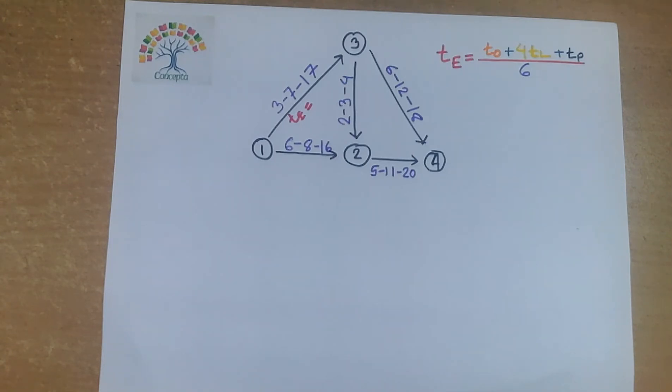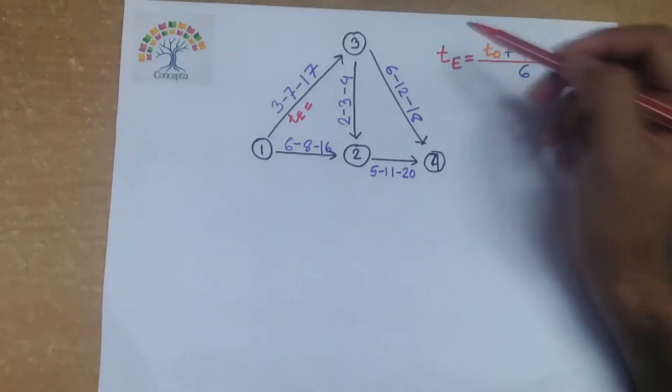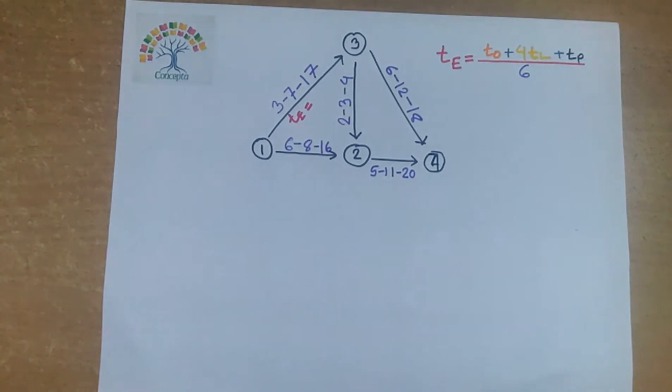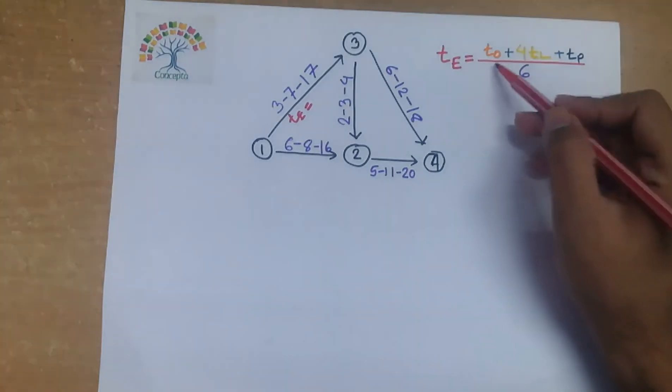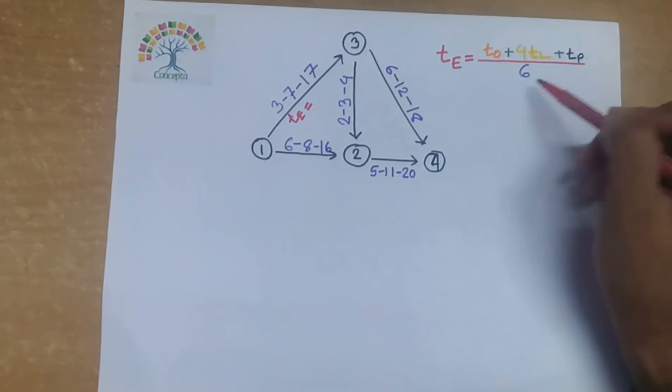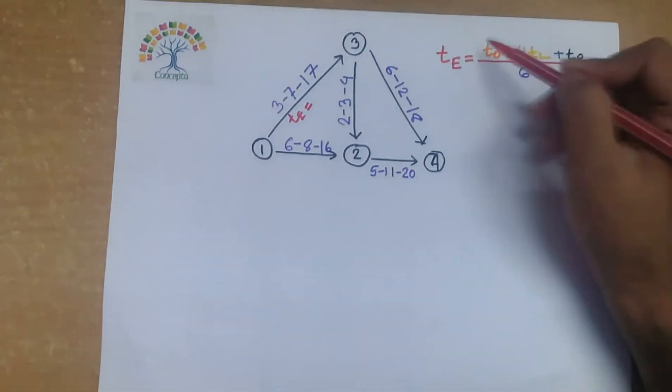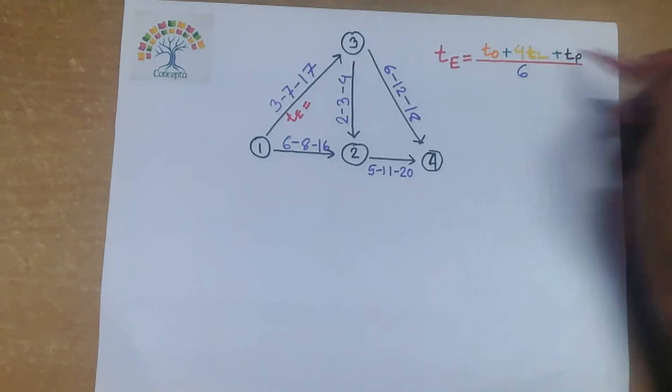the tricks using these three types of time. So for this purpose, an individual representative time is introduced which is expected time te. te is a weighted average and the formula is te equals to t0 plus 4tl plus tp by 6, where t0 is optimistic time, tl is the most likely time, tp is the pessimistic time.